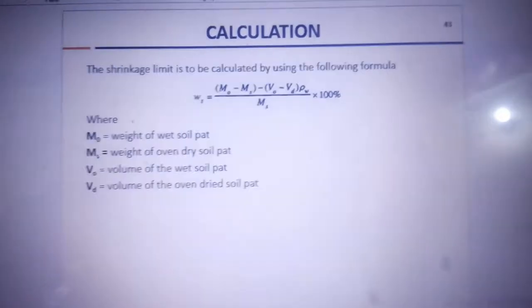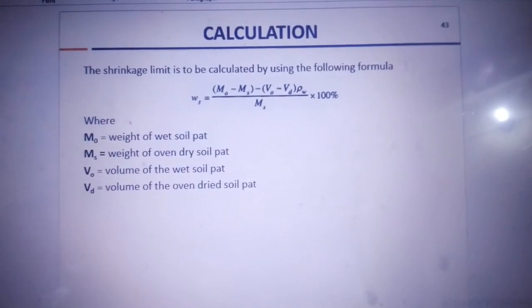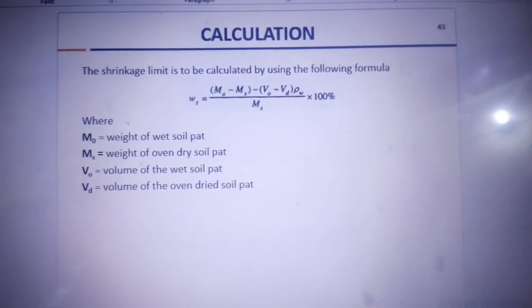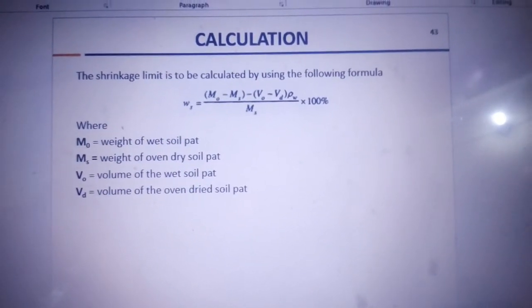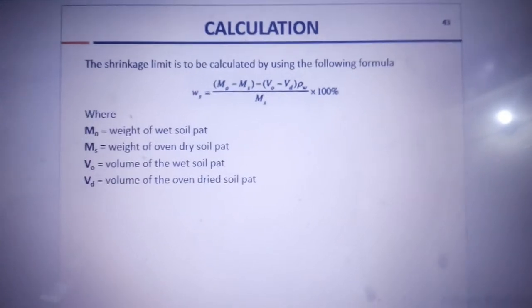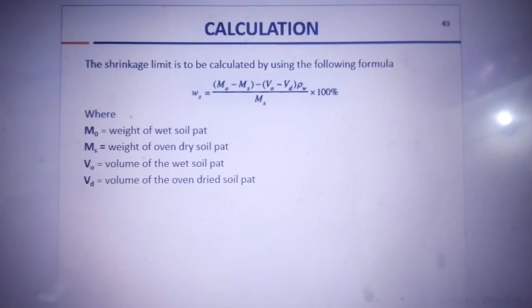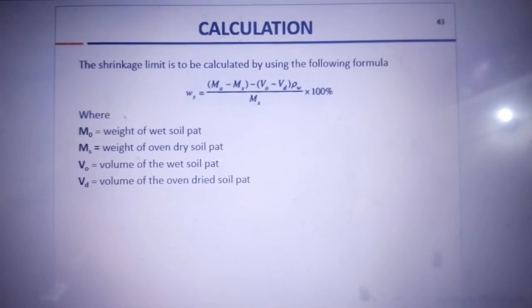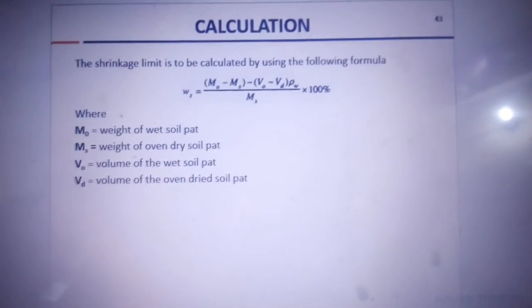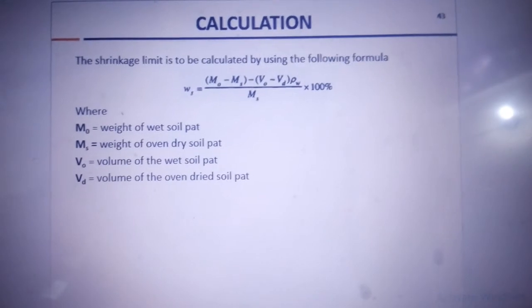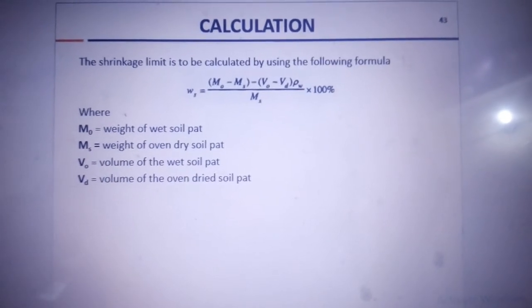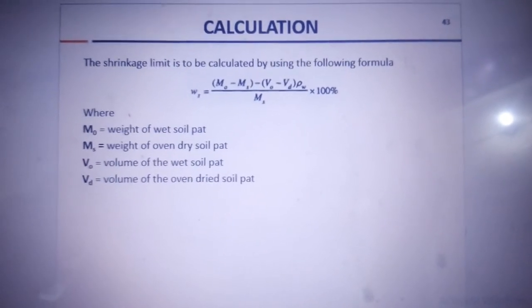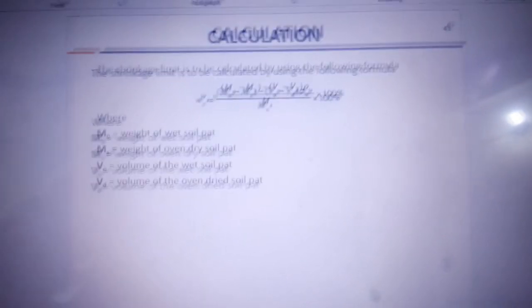I will record this value as V_d. Now, putting the values of M_nut, M_s, V_nut, and V_d into the equation shown on the screen, I will find the value of the shrinkage limit of soil.